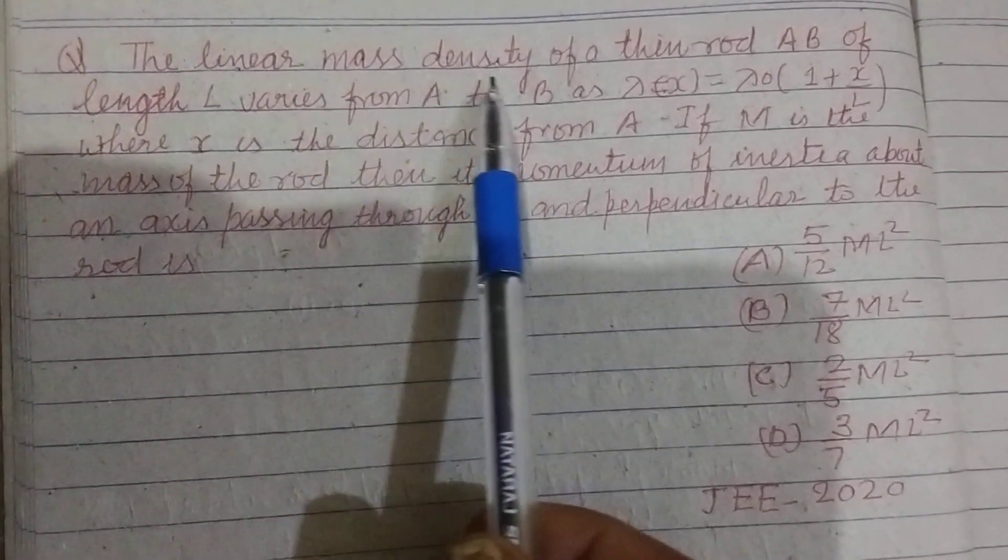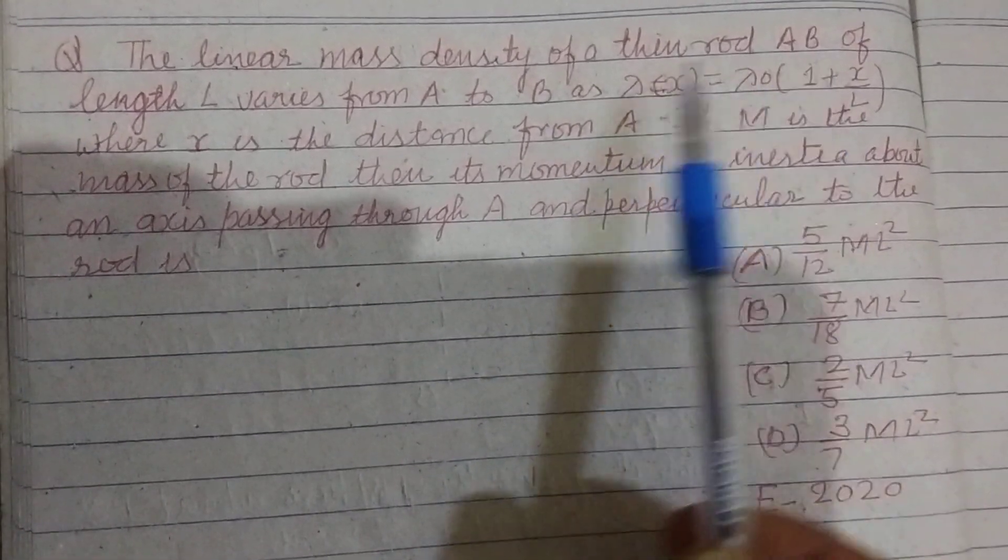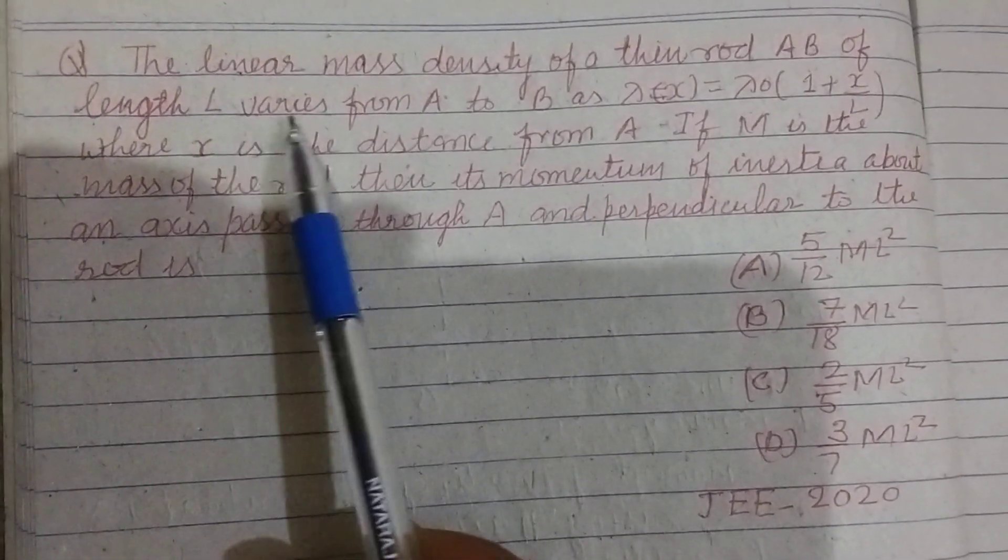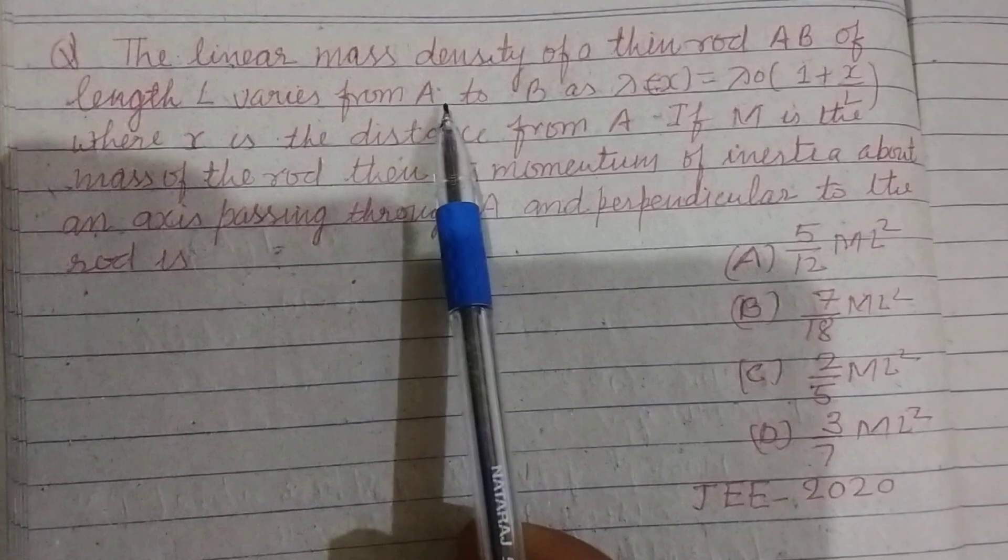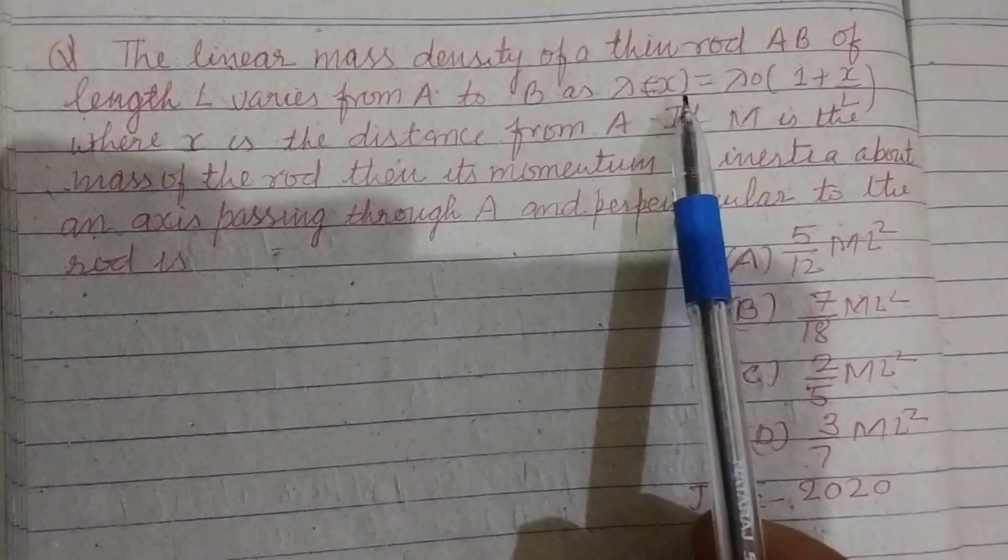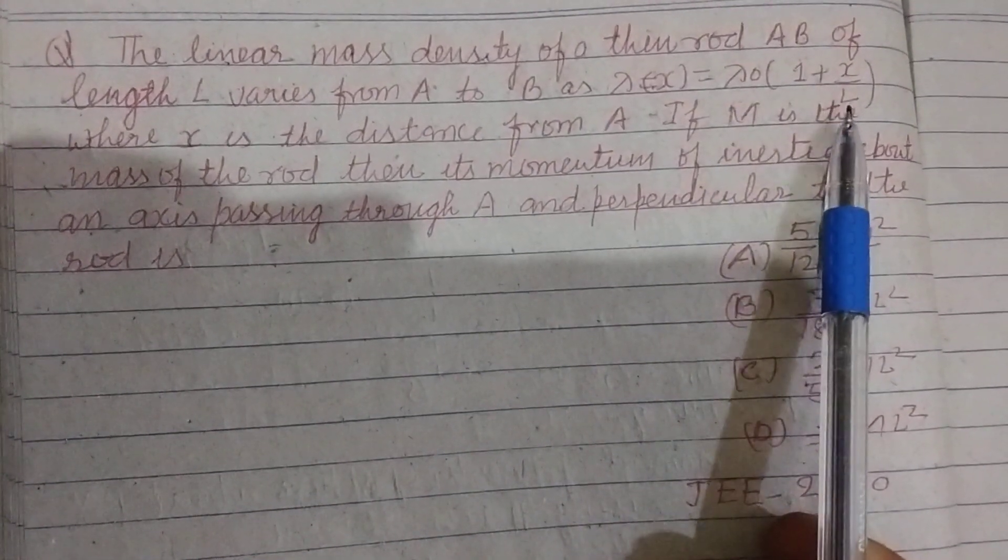The linear mass density of a thin rod AB of length L varies from A to B as lambda x equal to lambda naught times 1 plus x over L, where x is the distance from A.